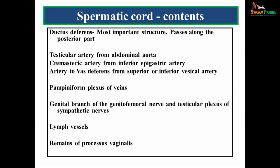The contents of the spermatic cord are very important. The most important content is the ductus deferens. Apart from that, there are arteries: the testicular artery from the abdominal aorta, the cremasteric artery from the inferior epigastric artery, and the artery to vas deferens arising from the superior or inferior vesical artery. There is also the pampiniform plexus of veins, the genital branch of the genitofemoral nerve, the testicular plexus of sympathetic nerves, lymph vessels, and remains of the processus vaginalis.